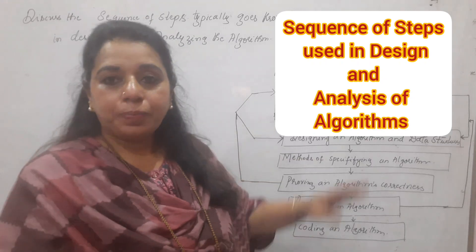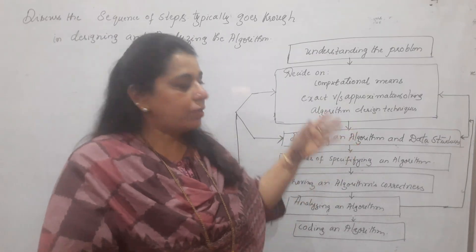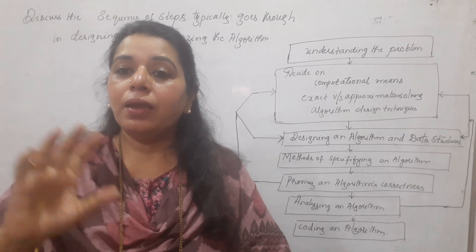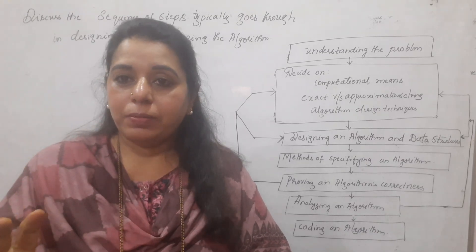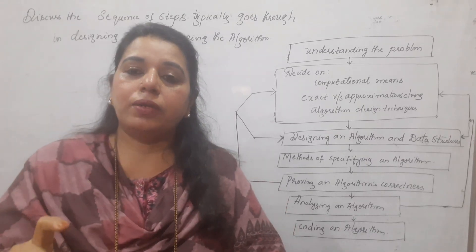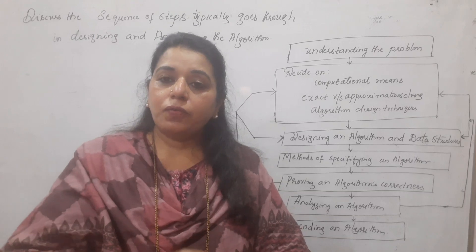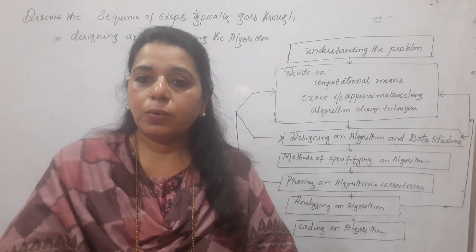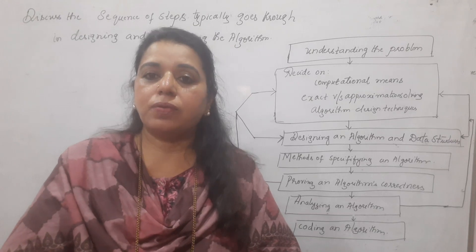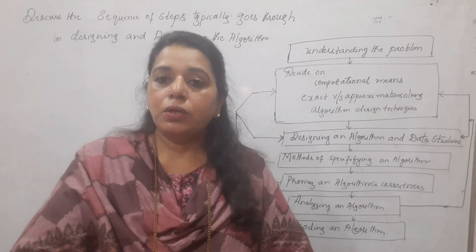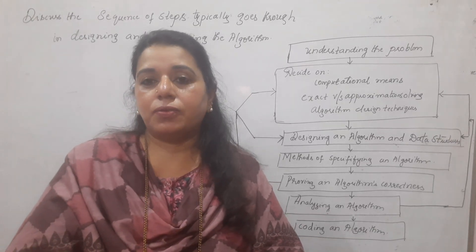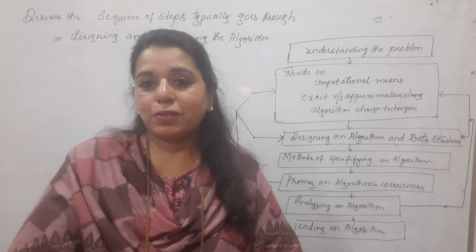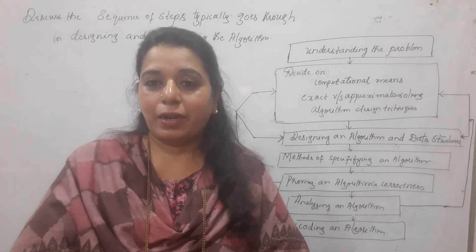You can remember these steps with this diagram. The very first step is understanding the problem — one should completely know what the problem is. To write a good algorithm, you need to think of all the instances of that problem. An input to an algorithm is an instance of the problem, so you try to collect various instances for that problem.